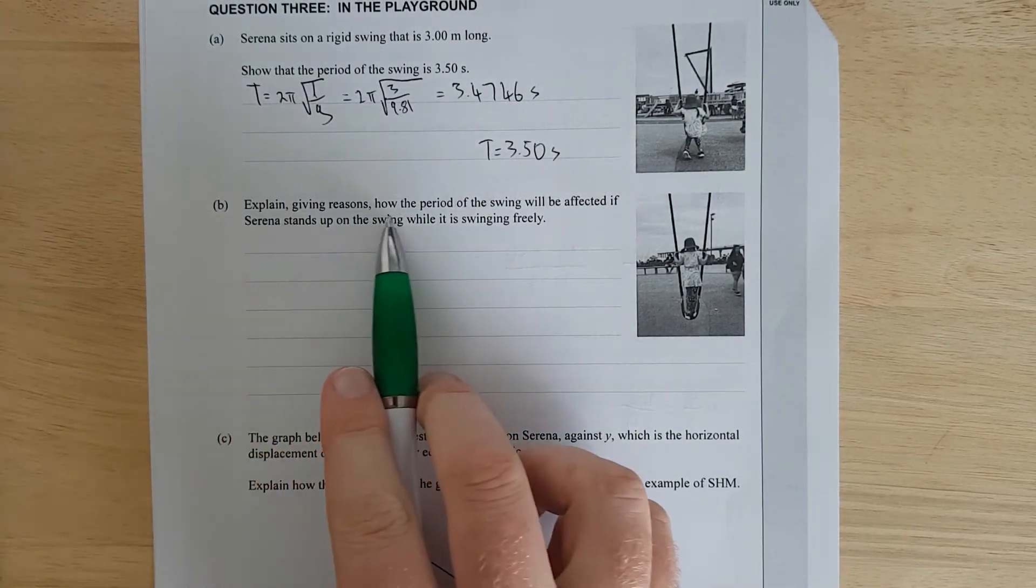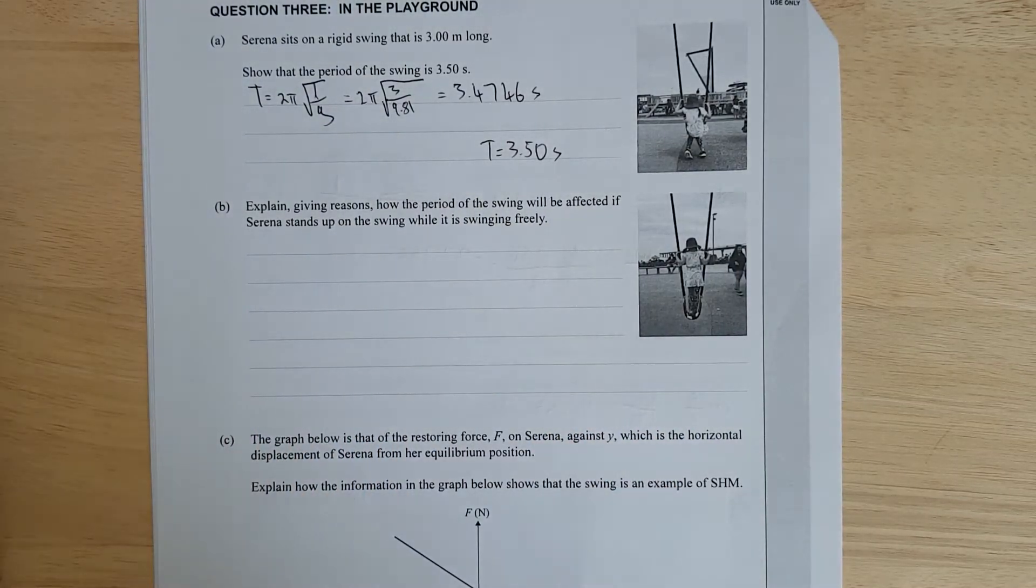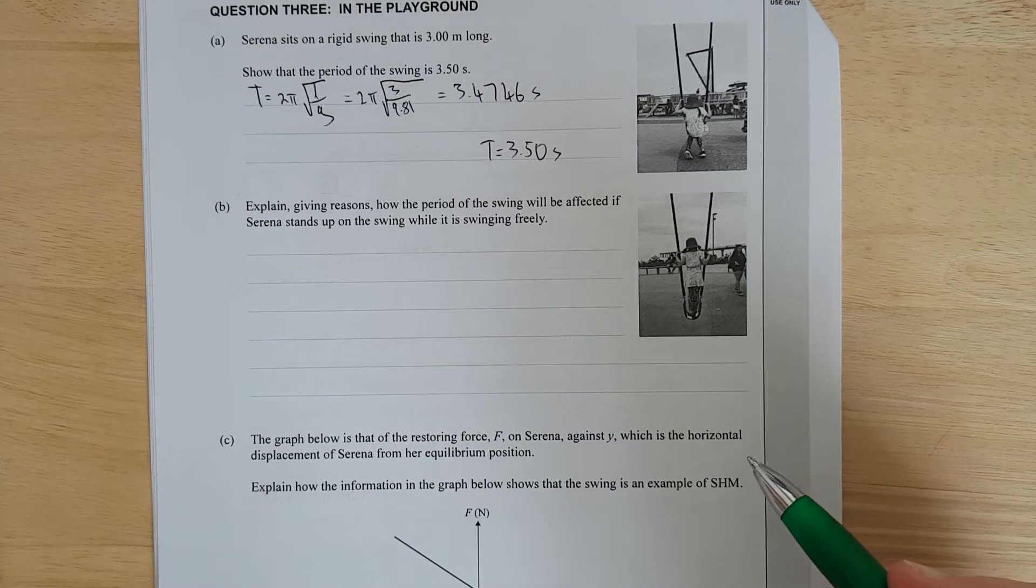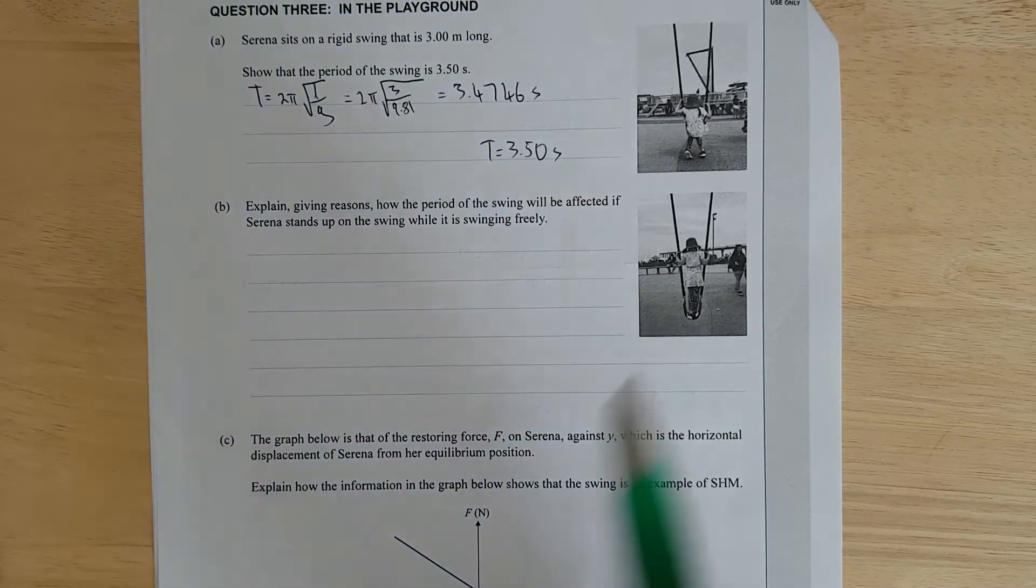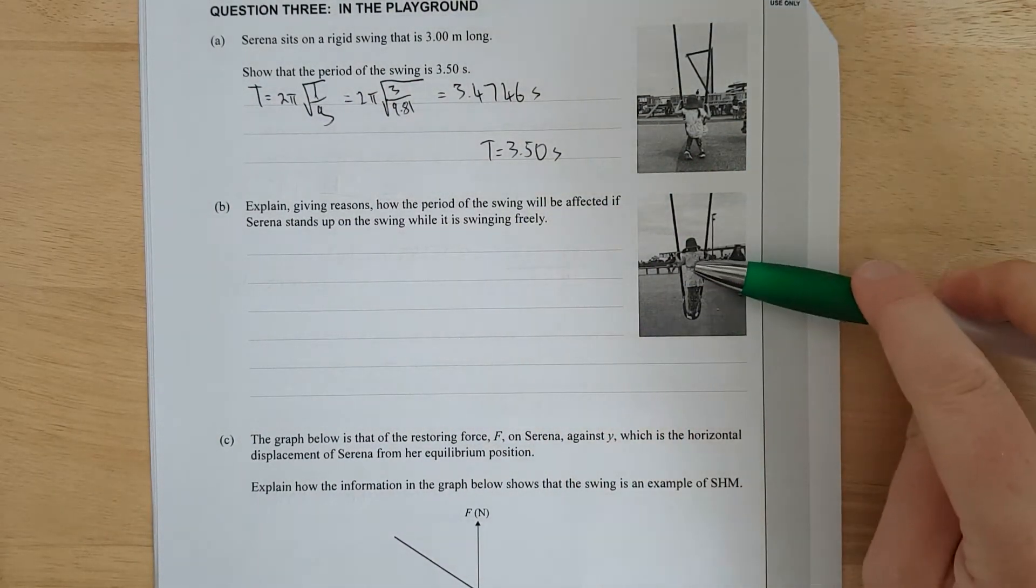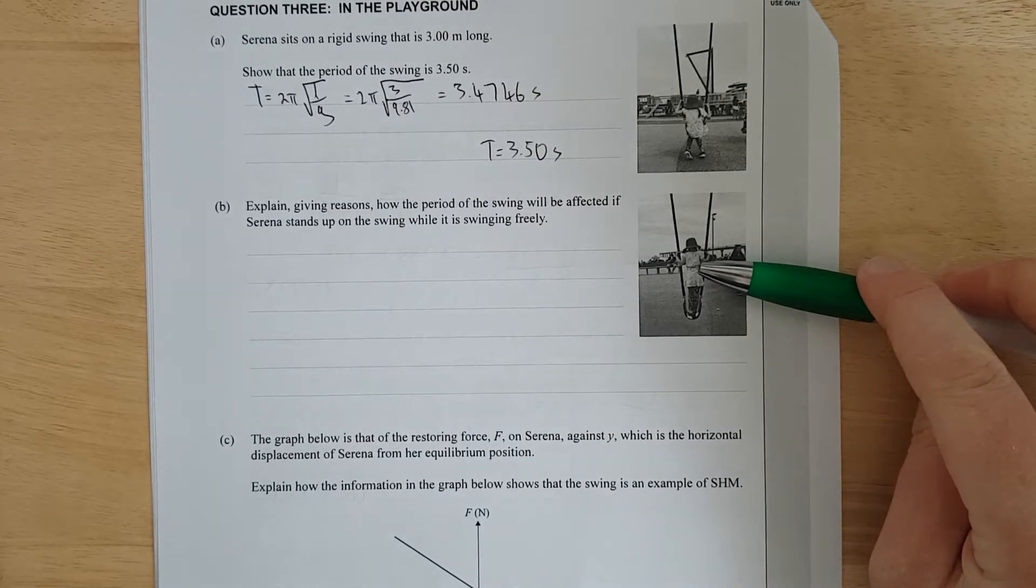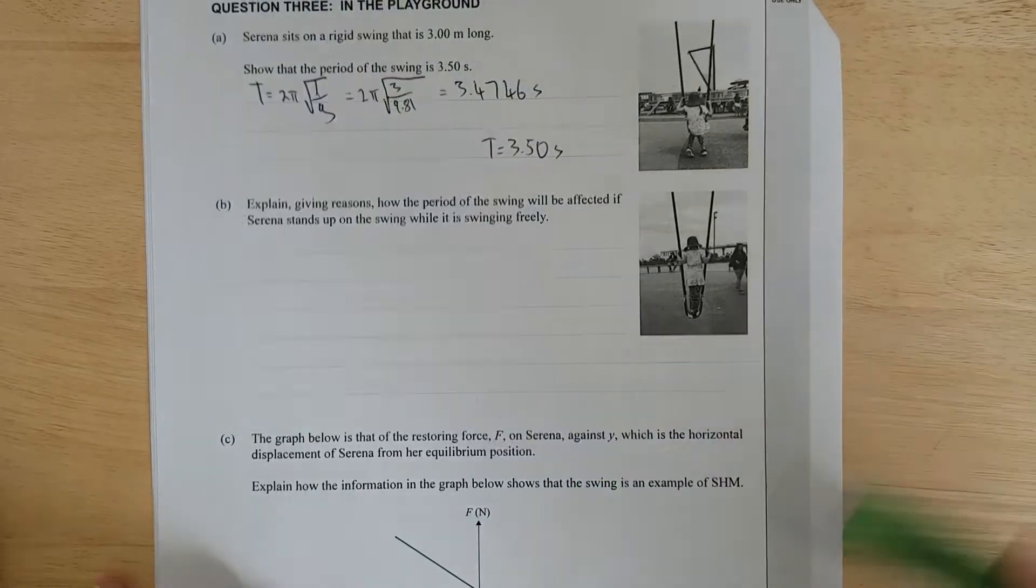Explain giving reasons how the period of the swing will be affected if Serena stands up on the swing while it's swinging freely. Well, this is an SHM question. Her centre of mass will move up, which will change the effect of length, which will shorten it. So the period will decrease. That's really it. I'll just pause and write it out.